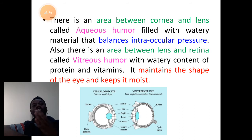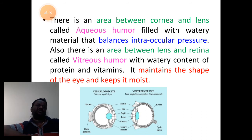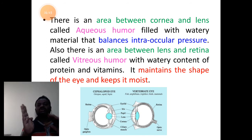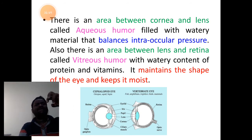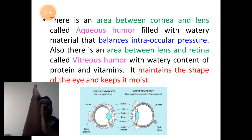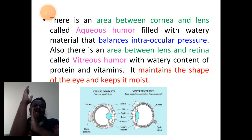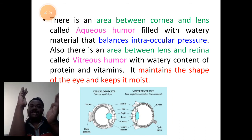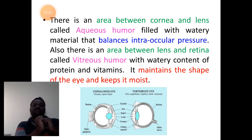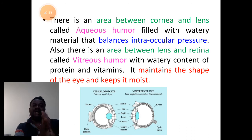The eye has two chambers. The interior part of the eye has anterior and posterior chambers, separated by the lens and ciliary band apparatus. In front there is the cornea, behind is the retina. Any part present between the cornea and lens is the anterior chamber — we call it aqueous humor. That chamber is filled with watery material that balances the intraocular pressure.